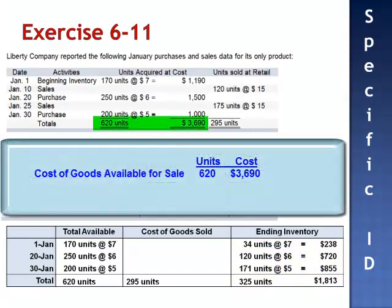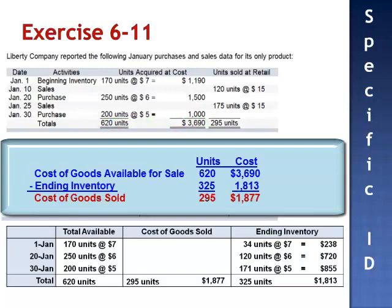Cost of goods sold is the total cost of goods available for sale, $3,690, minus the value of ending inventory, $1,813. Cost of goods sold is $1,877.